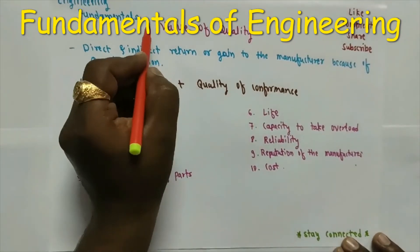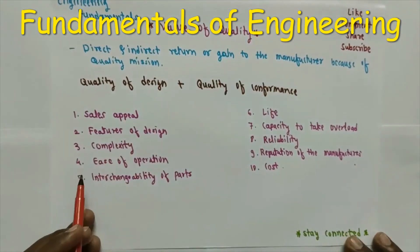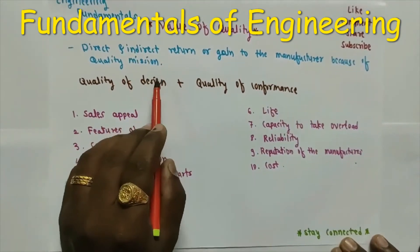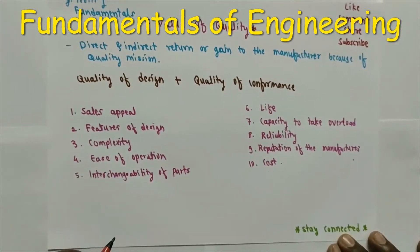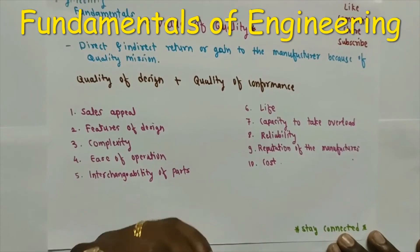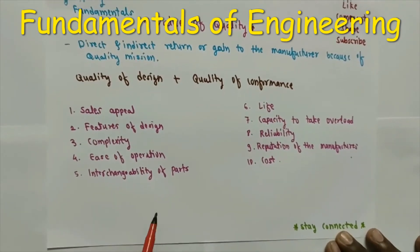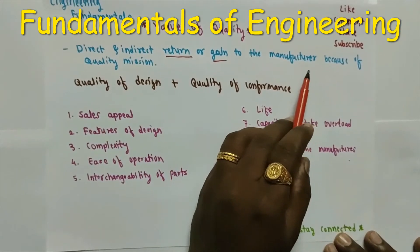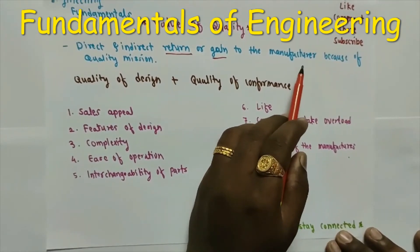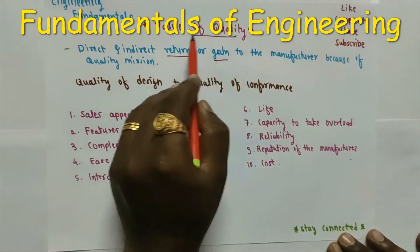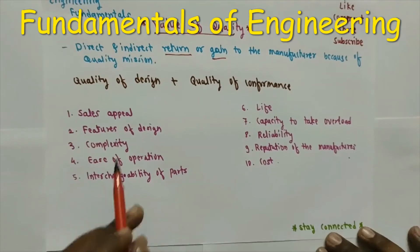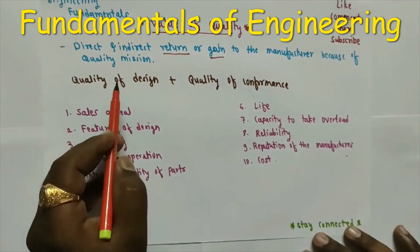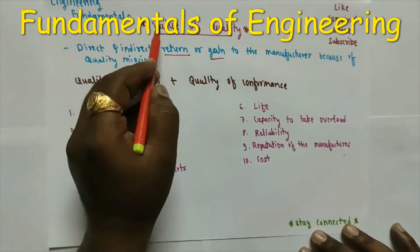Next is the value of quality. The value of quality is the direct or indirect return or gain to the manufacturer because of a quality product. If we minimize the cost of quality and provide a 100% quality level product with zero defects, we get a return to the manufacturer — in terms of increased sales. The value of quality is the sum of quality of design and quality of conformance.